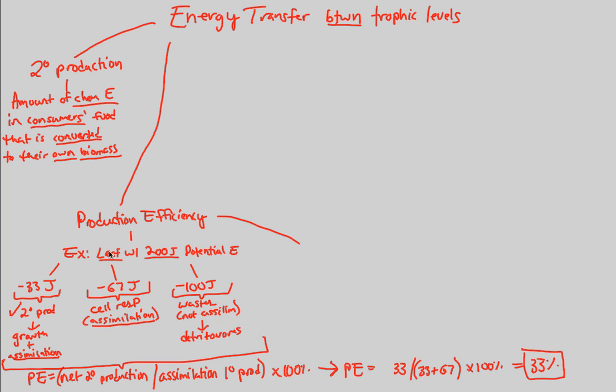Look what we just did. We took a primary producer and looked at how its energy transfers to another trophic level, the consumer level, in terms of 33% being how much production efficiency we got. If we look at some other examples of production efficiency, we'll see the following.